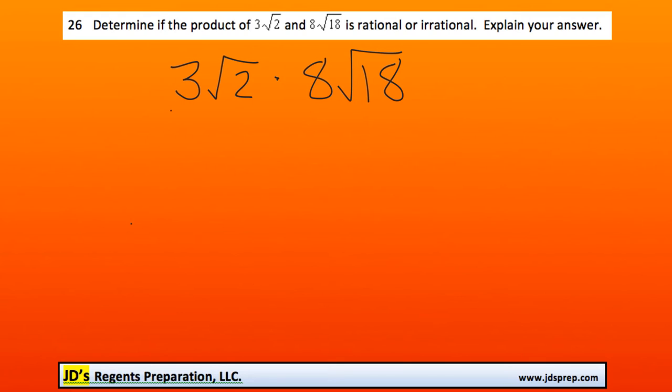Because both the 3 and the 8 are outside of the radical, we can multiply those two together, and we would get 24. And then because both the 2 and the 18 are both radicands inside the radical sign, we can combine those together by multiplying them as well.